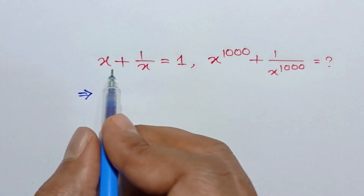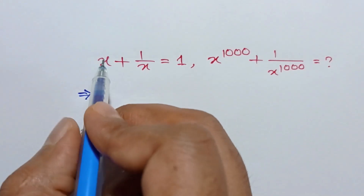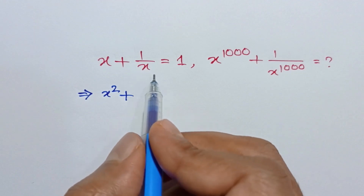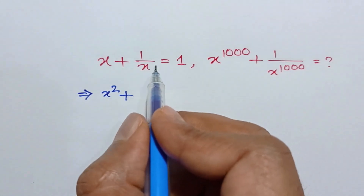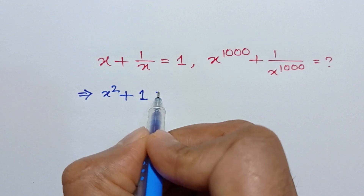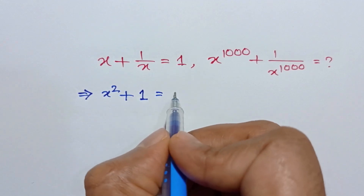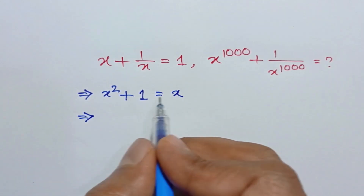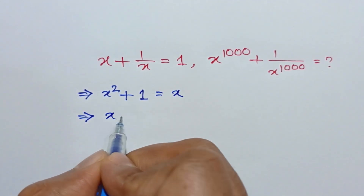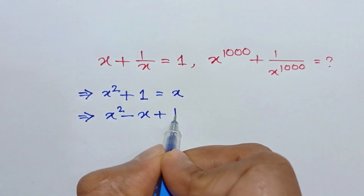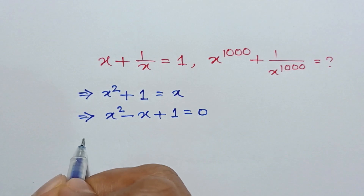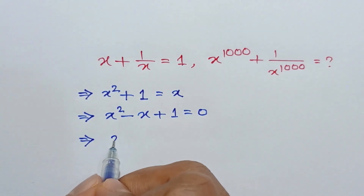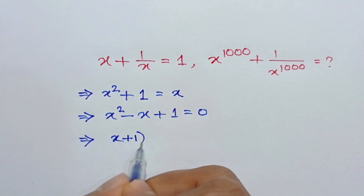If we multiply both sides by x, we will get x times x is equal to x squared plus 1. The x's cancel out, so we get x squared plus 1 equals x. Taking x to the left side, we will have x squared minus x plus 1 is equal to 0.